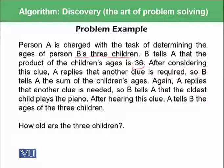It is very difficult to guess what is the actual age of these three children. Then after considering this clue, A replies that another clue is required. B tells A the sum of the children's ages, but we do not have the sum right now. Again, A replies that another clue is needed. B tells that the oldest child plays the piano. This means that you need to identify what is the age of playing a piano. If you inquire, you can find that even a child of very small age of one year or even below one year can strike the piano keys. This clue doesn't seem to be working fine for us.